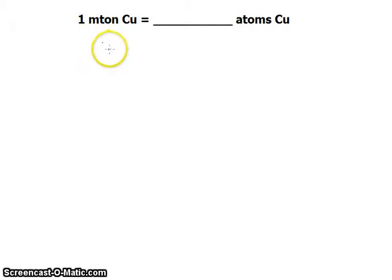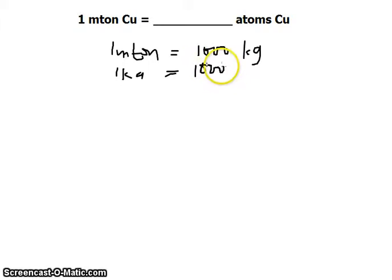So we need to convert one metric ton. It means 1000 kilograms, and 1 kilogram is equivalent to 1000 grams.